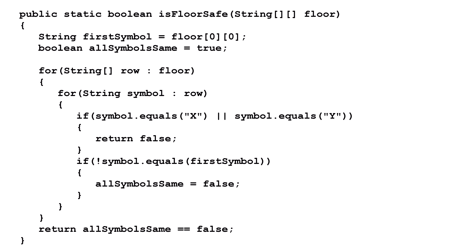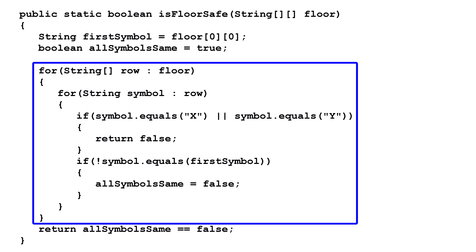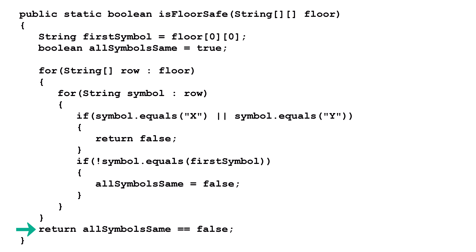Part B solution — IsFloorSafe. We start by storing the first value in the first row of the 2D array in the firstSymbol variable. Next, we set allSymbolsSame to true because we will assume all the symbols are the same until we find evidence to the contrary. The outer for loop pulls each 1D array out of the 2D array. The inner for loop pulls out each individual symbol from a 1D array. We check if the symbol is either X or Y. If it is, the floor is unsafe, so we can immediately return false. Next, we check if the current symbol is not equal to the first symbol. If we find even one symbol that is not the same as the first, we've proven that all symbols are not the same. We can't immediately return true because even though we've proven all symbols aren't the same, we can't be sure there isn't a danger symbol later on. After traversing the entire 2D array, we return true as long as allSymbolsSame is false.